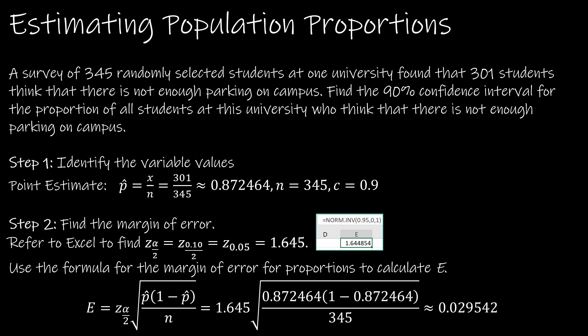Before we look at the steps, as you're reading you should be labeling things. So n is 345, that's how many people were surveyed. 301 is going to be X - that's how many think there's not enough parking, so that's the number of successes. We're finding a 90% confidence interval, so C equals 0.9, and of course then alpha is 1 minus 0.9, which is 0.1.